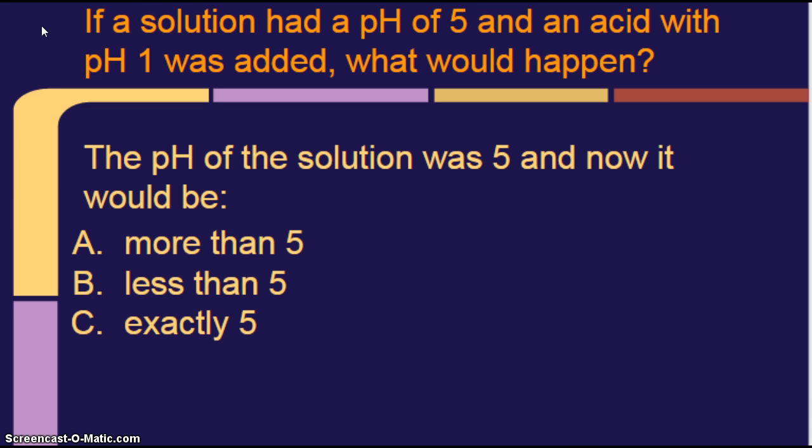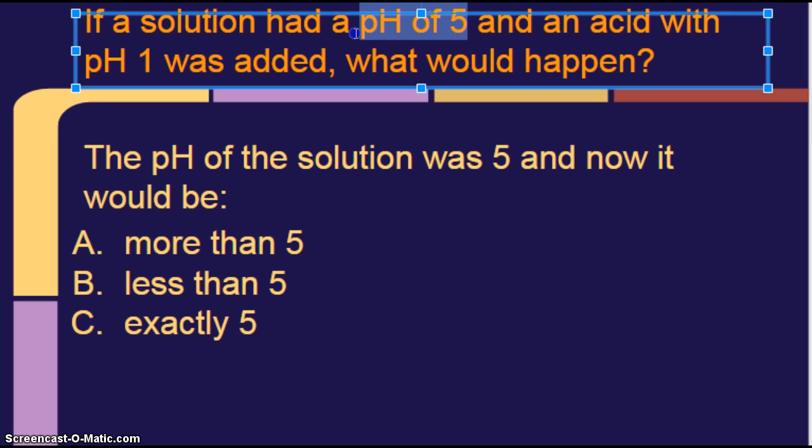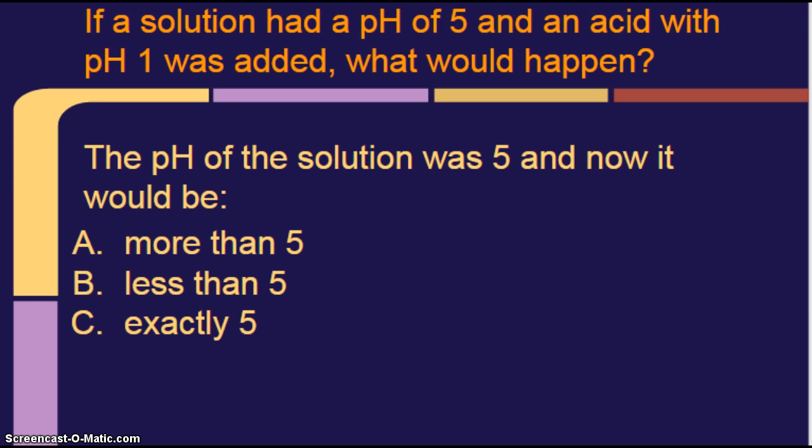If I had a solution, and if my solution had a pH of 5, and an acid with pH of 1 was added, what would happen? Alright, so let's break this down. I'm starting out in my beaker with a pH of 5. So is my solution an acid, base, or neutral to start with? It's already acidic.